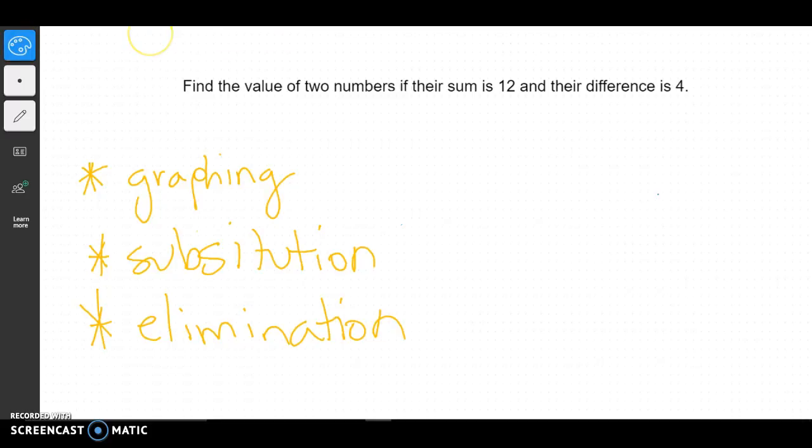The first thing that I like to do is get my variables, because if you don't know what you're trying to find, you're not going to be able to find it. So the first thing we do is read through the problem and figure out what we're looking for. It says find the values of two numbers if their sum is 12 and their difference is 4. So we're looking for two numbers. I'm just going to call these x and y. Let x be the first number and y be the second number.